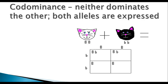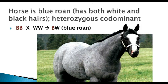Another exception to what Mendel predicted is codominance. In codominance, two different alleles are both dominant — neither dominates the other, and both are expressed. Instead of gray kitties, you'd have black-and-white spotted kitties. An actual example is the blue roan horse: if you look closely, the hairs are not gray — there are black hairs and white hairs that together look gray or blue from a distance. This is a heterozygous codominant trait.